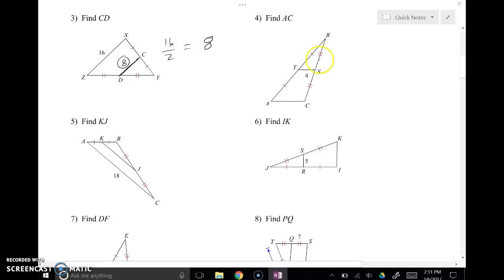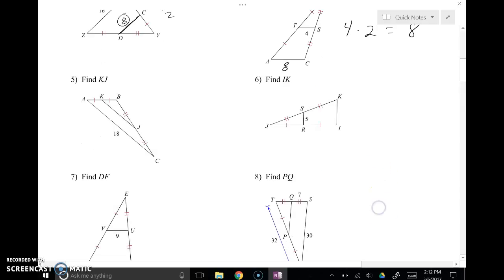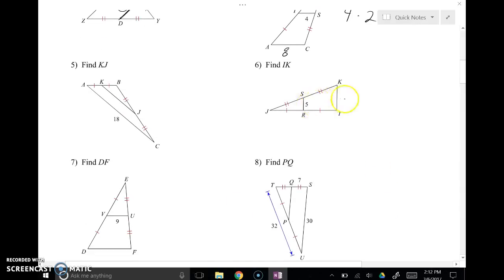If we go the other direction, you can see here that TS is a mid-segment according to the markings here. So it must be half the length of its corresponding side. So 4 times 2 is 8. So AC is 8. So the mid-segment is half the length of the third side or the corresponding side. And the corresponding side is twice as big as the mid-segment. So again, multiple examples that we have here.